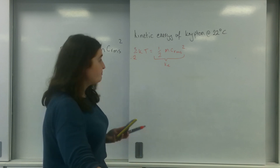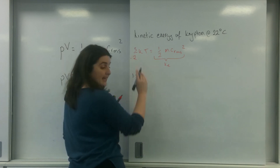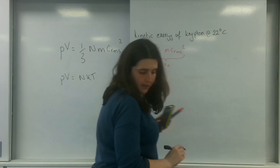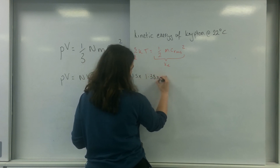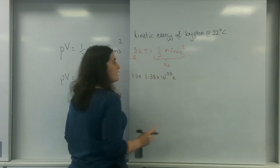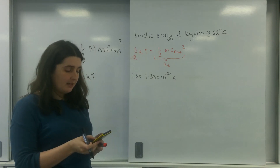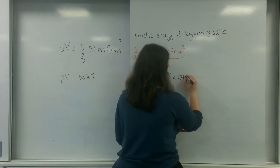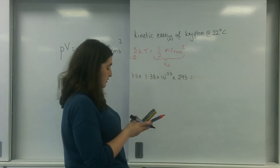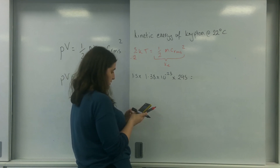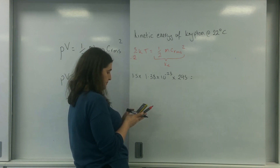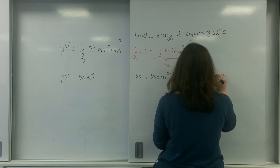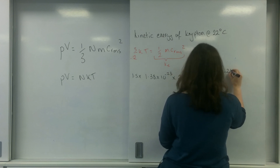So I can just put that in: 1.5 times by K, which is in my data sheet — 1.38 times 10 to the minus 23 — times by my temperature, which has to be in Kelvin, so it's 273 plus 22. That gives 6.1 times 10 to the minus 21 joules.